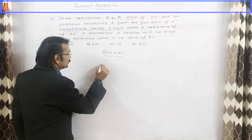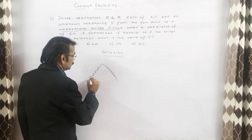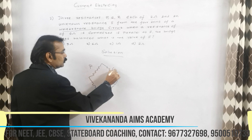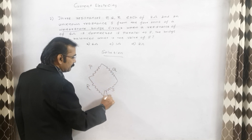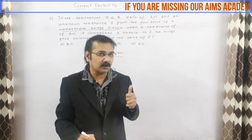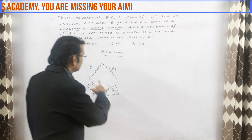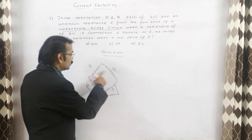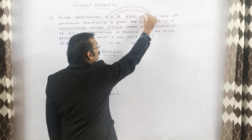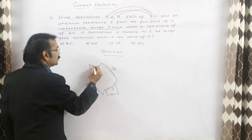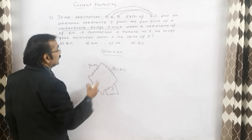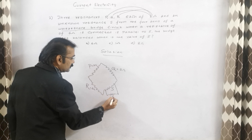Let us draw the diagram here. So the Wheatstone bridge will be like this, with values P, Q, R, and S. S has been connected in parallel with 6 ohms. Now you tell me what is the value of P — it is 2 ohms. The value of Q is 2 ohms. The value of R is also 2 ohms. And the parallel resistance connected to S is 6 ohms. Please take your pen and write down this diagram in your notebook — this is a very important diagram.